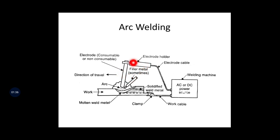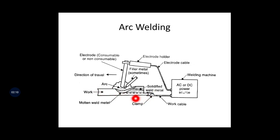The electrode acts as a cathode. In the electrode holder you place the electrode. The power supply can be AC or DC — the welding machine has transformers to supply electricity. The workpiece acts as an anode. The direction of travel means the electrode moves from right hand side to left hand side. A clamp is used to fix the workpiece rigidly so it does not slide due to the movement of the electrode. This is connected via a work cable.